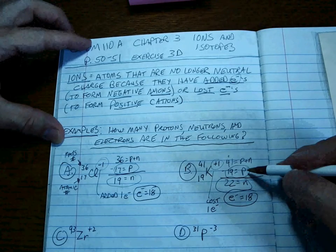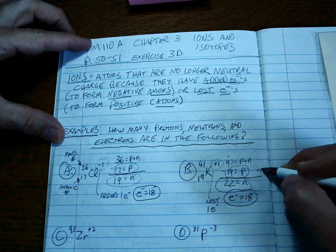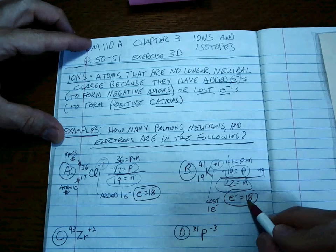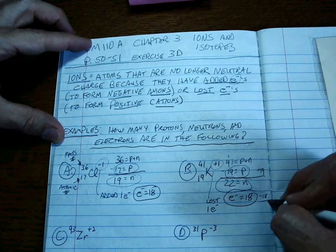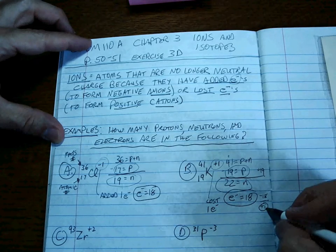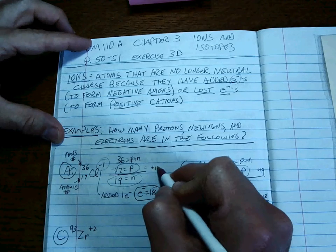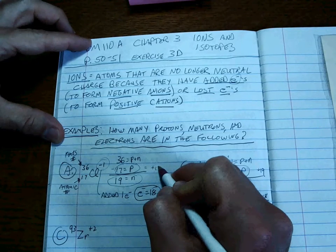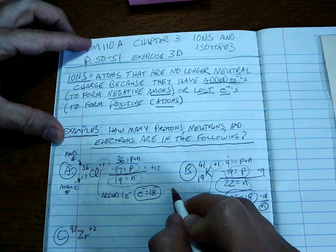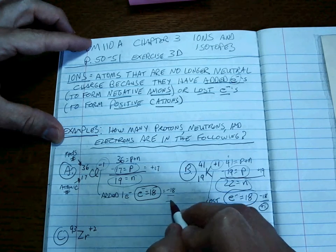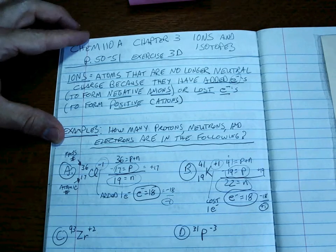Think about it. 19 protons, each of which is plus one, so that's plus 19. 18 electrons, each of which is minus one, so that's minus 18. Doesn't that add up to plus one, which is what the charge is? Over here, 17 protons adds up to plus 17. 18 electrons is minus 18. Add those up, it's minus one, which is what the charge is. So that's a nice way to go back and check.